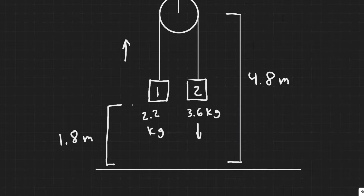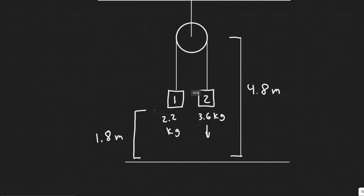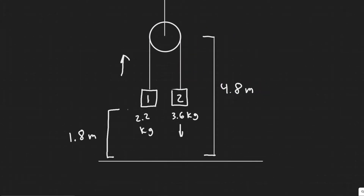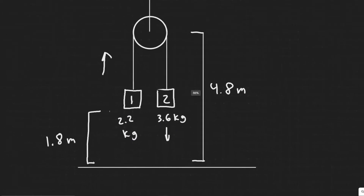What we're trying to find is essentially how far the lighter mass — mass 1 in this case — is above the ground after the whole thing gets released. Following the hint in the problem, the first thing we should do is determine the acceleration of the lighter mass. We know that both blocks accelerate at the same rate because they're connected by the pulley, so we can solve for the acceleration of the system.